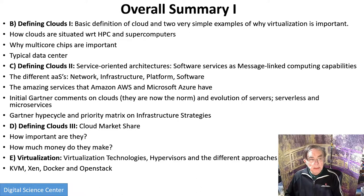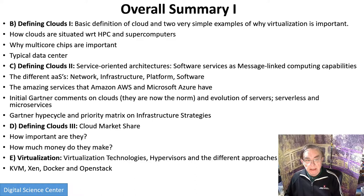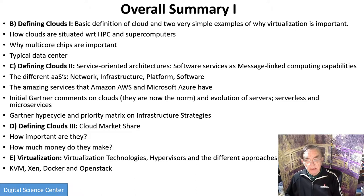Hi everybody. This is the beginning for this cloud overview. This section, called Section A, summarizes the remaining sections, B through U. Each of these is around 8 to 20 slides and covers a subtopic of this introduction. Section A has a few of the subtopics on each page. Here we have four of the subtopics — A is what we're on now, and B is the first real subtopic.